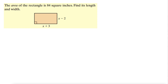The area of the rectangle is 84 square inches. Find its length and width. It gives us this rectangle here with sides of length x plus 3 and width x minus 2.